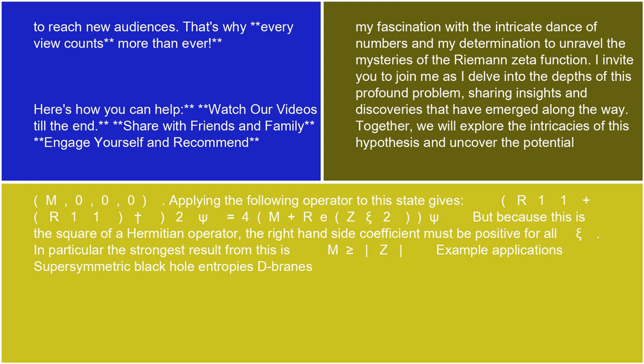Applying the following operator to this state gives: (R_{1}^1 + R_{1}^{1†})^2 |ψ⟩ = (4m + |Z|) |ψ⟩. But because this is the square of a Hermitian operator, the right-hand coefficient of |ψ⟩ must be positive for all |ψ⟩.